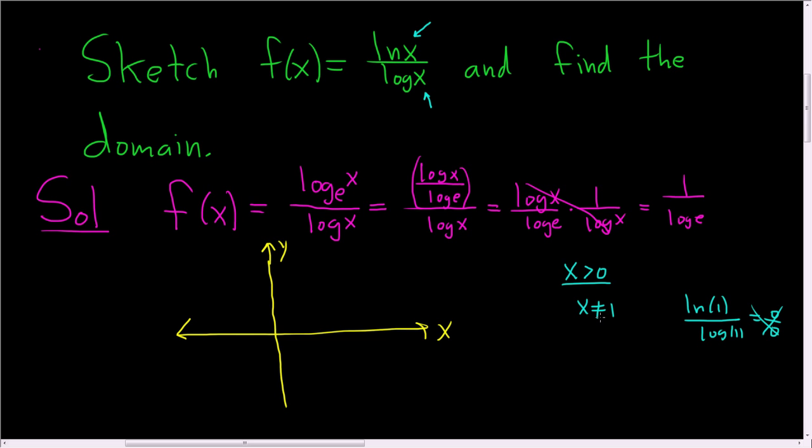So x has to be positive and x can't be equal to 1, and this is a constant. So the graph is going to look something like this. We're going to have a little hole at 0, and we're going to have a little hole at 1, and it's going to be a horizontal line. And that line is 1 over log e.